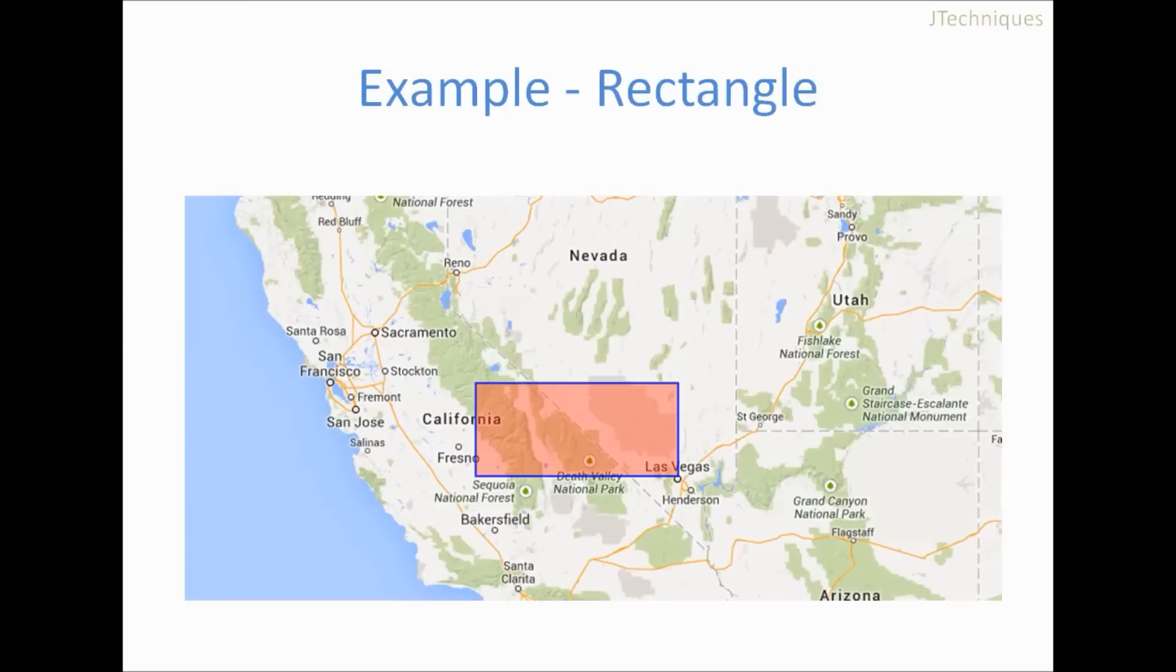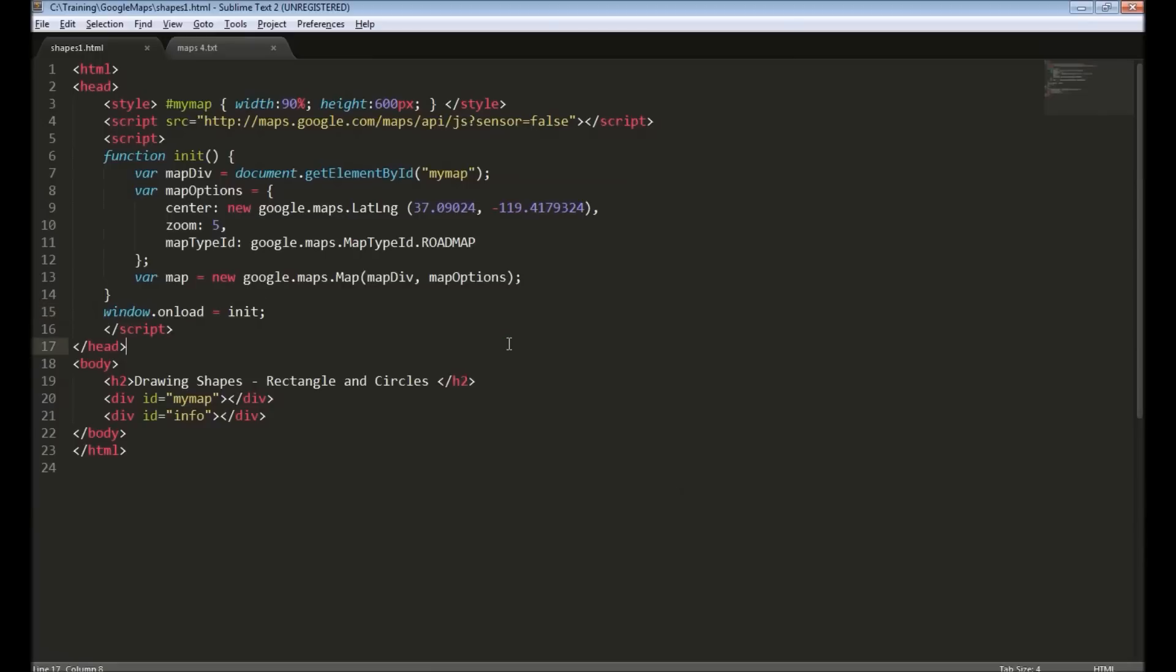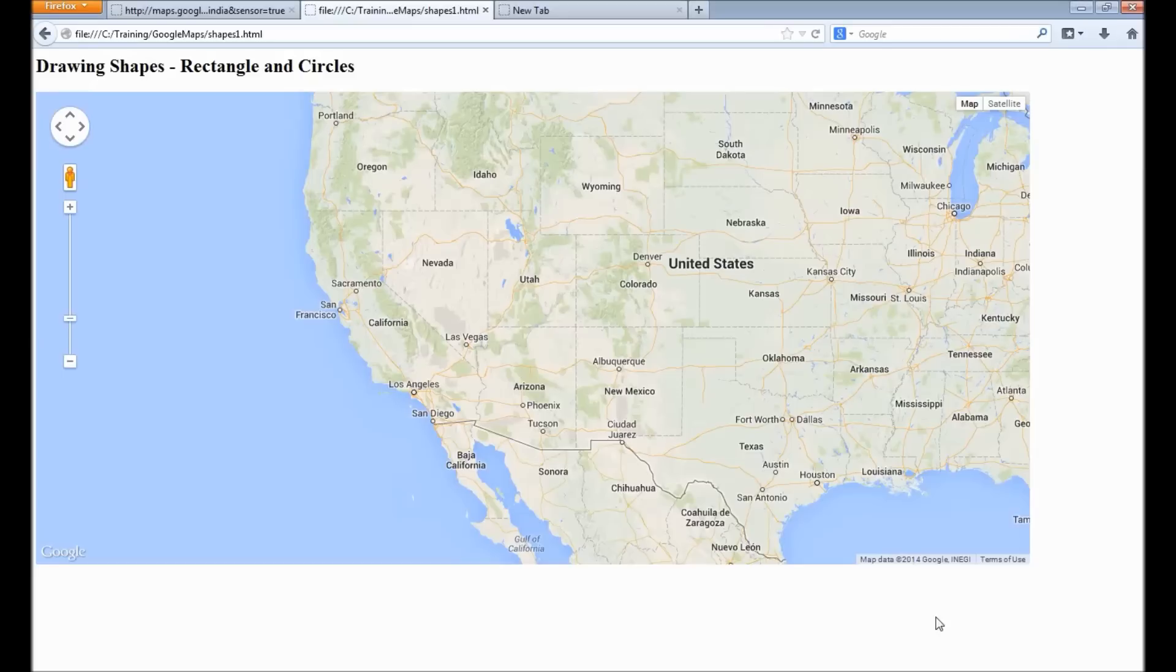Let's look at the example. We will try to create a rectangle similar to this. To start with, I have a simple Google Map code which just creates a Google Map and displays it in a div. The map looks something like this.